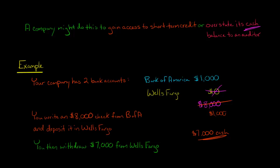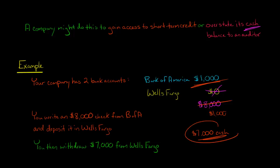They're hoping they can somehow come up with the money to cover the check they wrote on the Bank of America account. Bank of America only has $1,000, but they'll need $8,000 when that check clears. So after using the $7,000 for whatever they need, they're hoping they can get another $7,000 and put it back before the bank finds out. It's a desperate situation and it's definitely illegal.